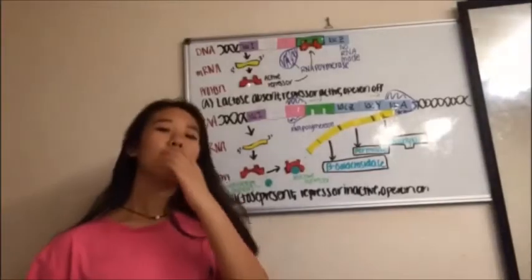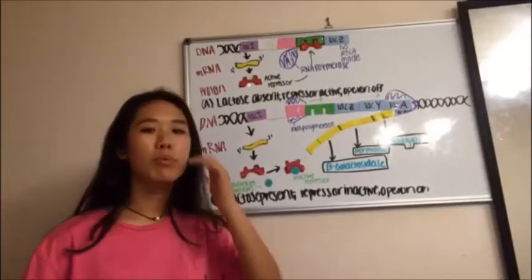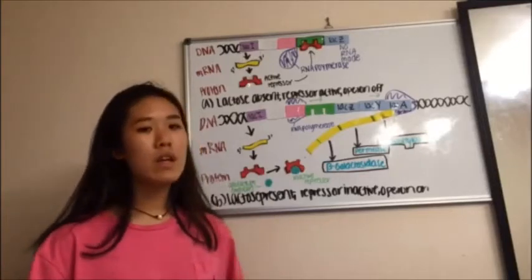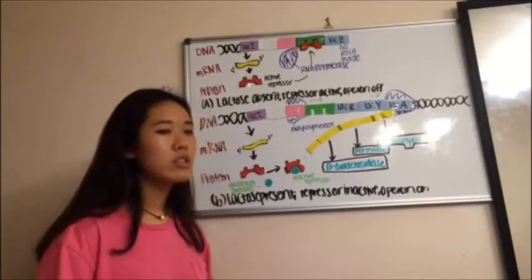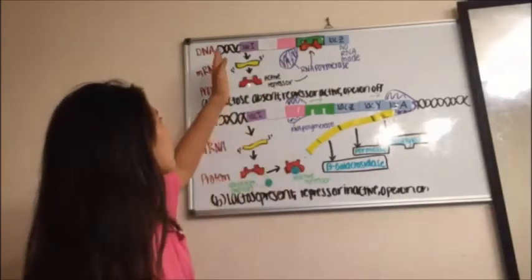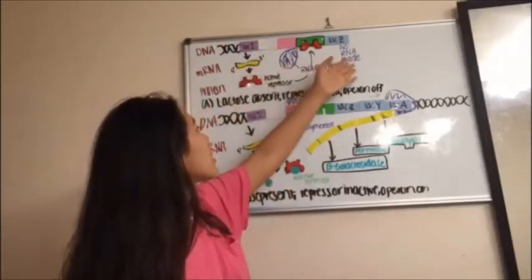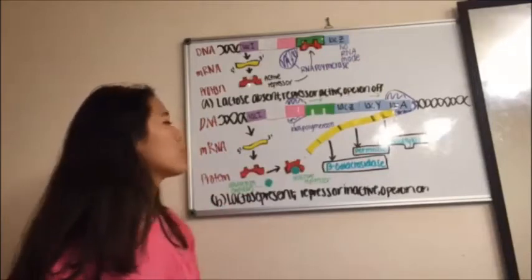So in this diagram, it represents regulated synthesis of inducible enzymes of the lac operon in E. coli. Usually the lac operon is off, which means that the repressor is active. When lactose is absent, it is able to bind to the operator, so it won't allow RNA polymerase from going down the chain, thus RNA is not made at all.